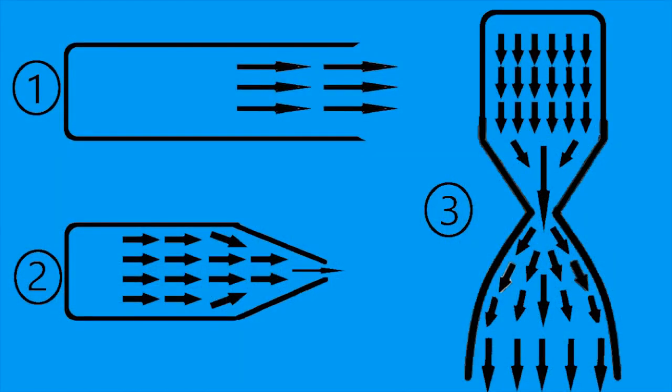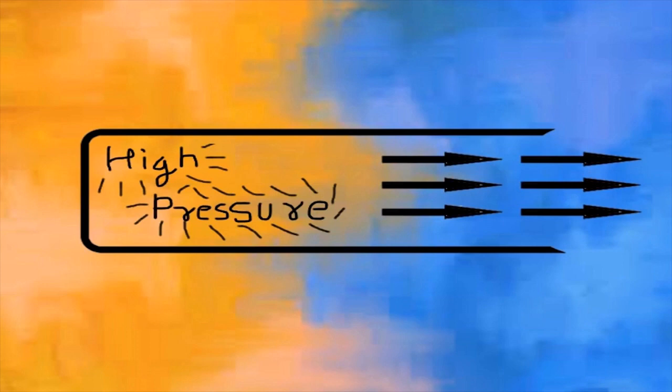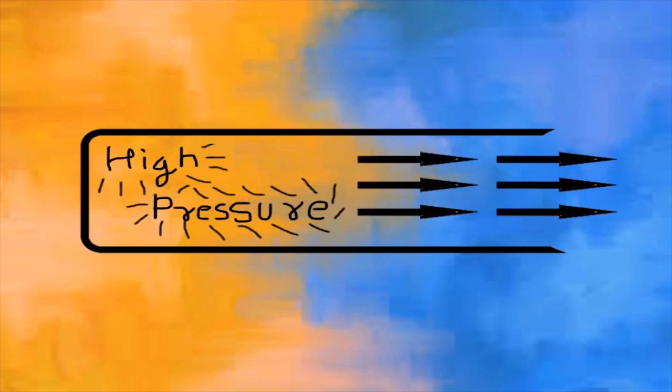Let's look at three different shapes of the engine. The first one is a simple tube with pressurized gas inside. When you open it from one end, the gas will come out of it fast, but not even close to what we need to lift the rocket.